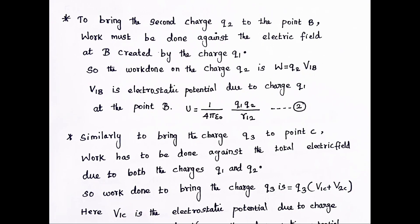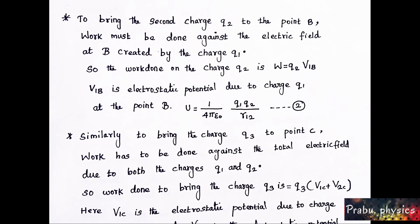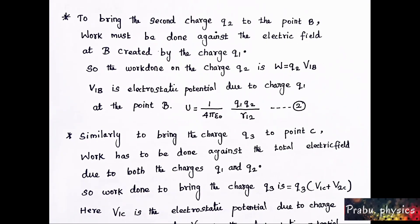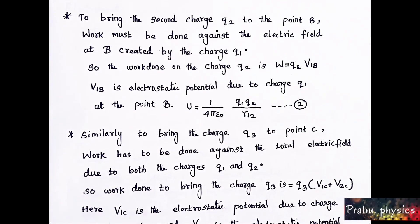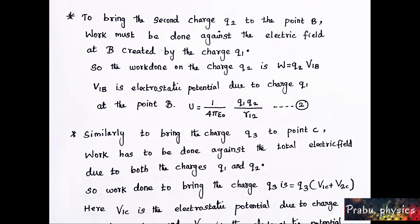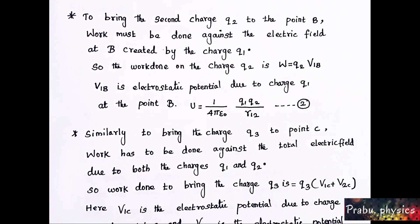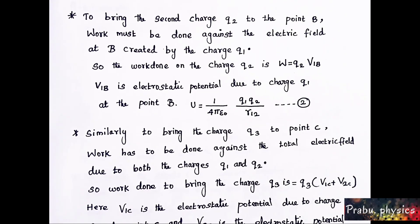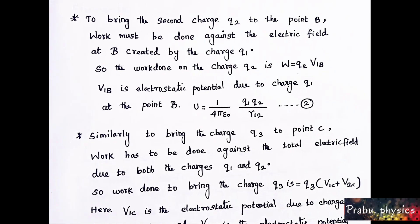Next, to bring the second charge Q2 to point B, work must be done against the electric field at B created by the charge Q1.